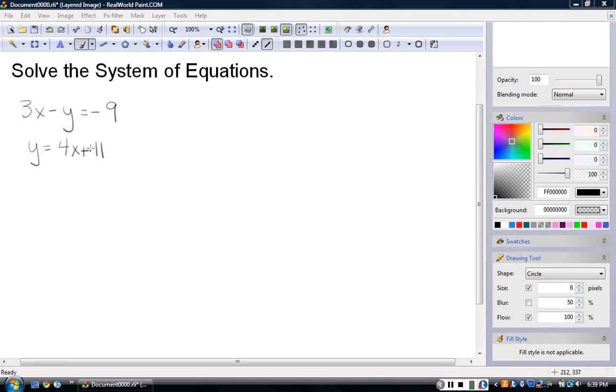Let's try that. I'm going to take this whole thing, 4x plus 11, and substitute it right there for y, because they're both y. So 3x minus this equals negative 9 because this is y.